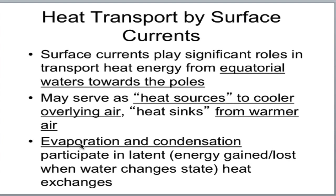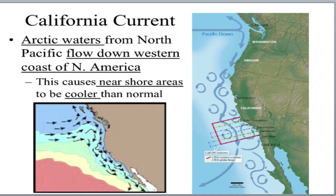The same thing is happening to the air temperature when you have evaporation or condensation. Let's get into some examples. The California Current is one of those heat sinks — losing heat, getting drained out. It's cool surface water from the Arctic, up by Canada. It moves south along the coast of North America, and you can see it here with all these eddies and cool stuff.